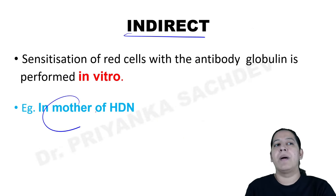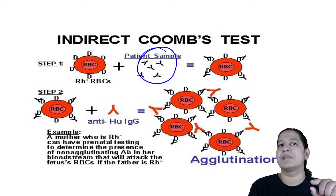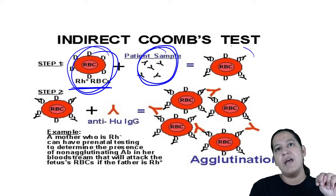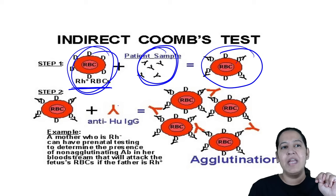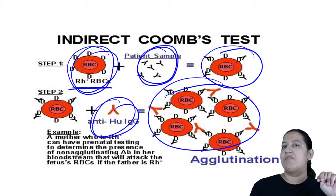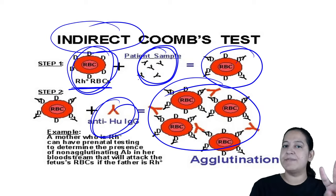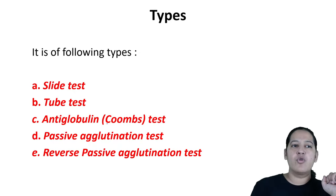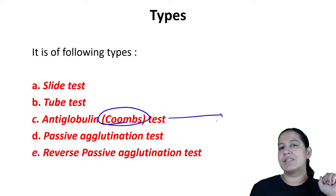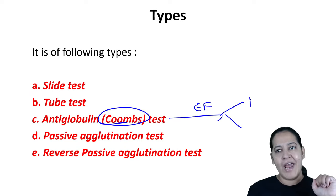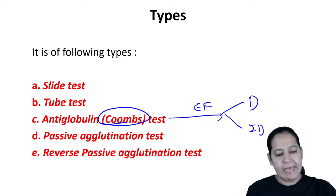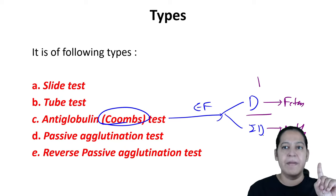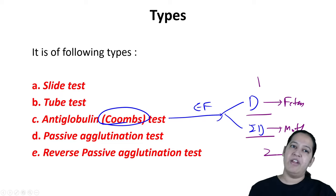Summary of Coombs test: it is performed for erythroblastosis fetalis. Direct Coombs test is for the fetus, occurs in one step. Indirect Coombs test is for the mother, occurs in two steps. If agglutination is seen, the condition is confirmed and appropriate management — including possible termination or treatment — is advised depending on the stage of pregnancy.